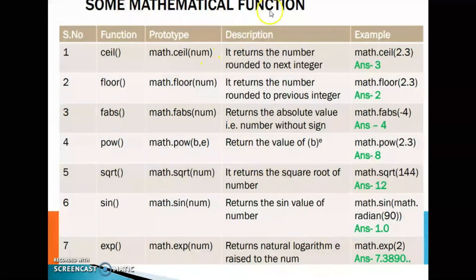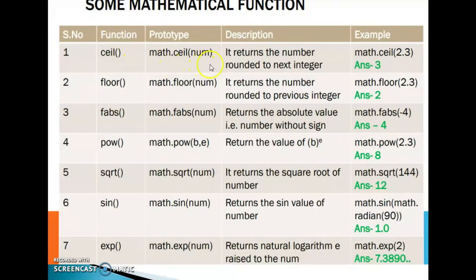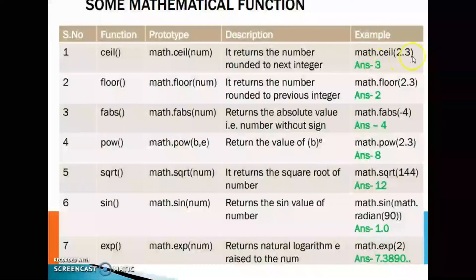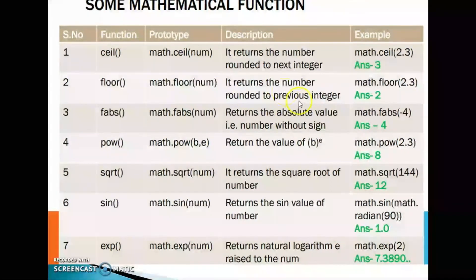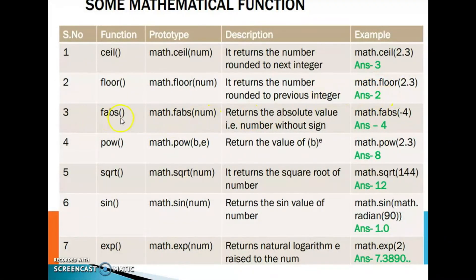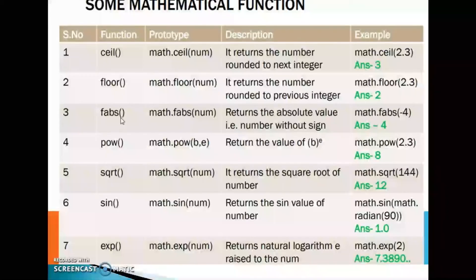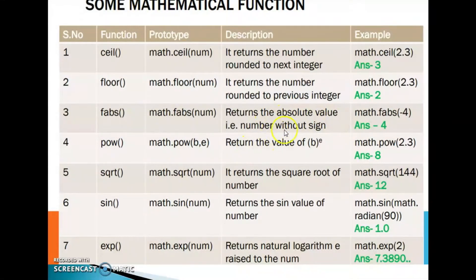Some mathematical functions: math.ceil(num) returns the number rounded to the next integer — for example math.ceil(2.3) gives 3. math.floor(num) returns the number rounded to the previous integer — math.floor(2.3) gives 2. math.fabs(num) returns the absolute value, that is the number without sign — math.fabs(-4) gives 4.0. math.pow(b, e) returns the value of b raised to e — for example math.pow(2,3) gives 8.0.